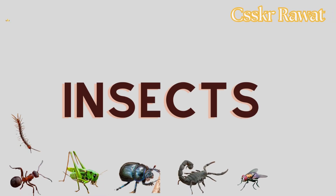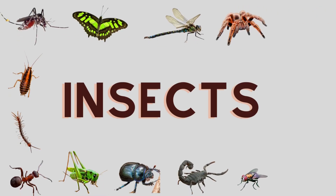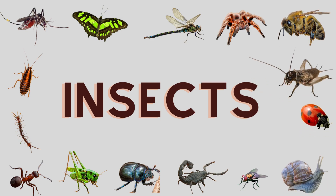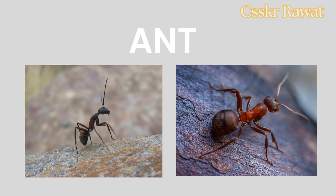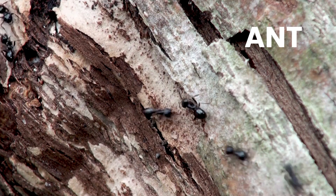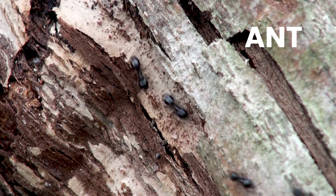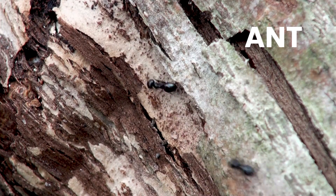Insects are small animals. They come in all sorts of shapes, sizes, and colors. Insects are found all around the world and they play important roles in nature. Let us see the list of insects. Honey Bee,